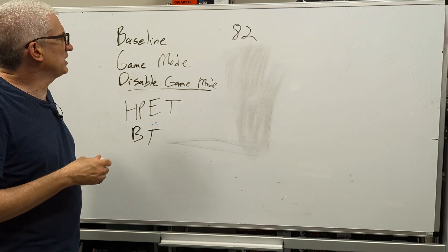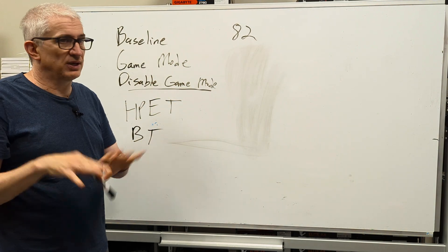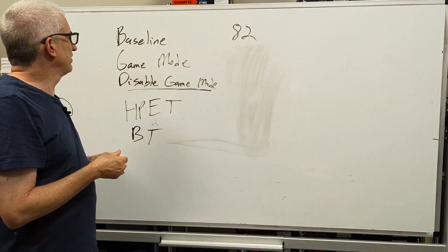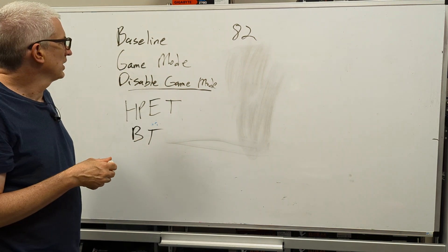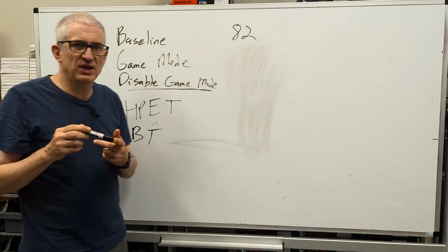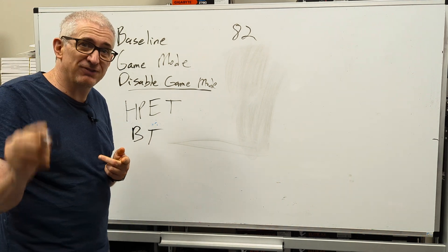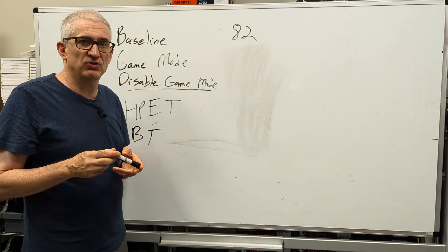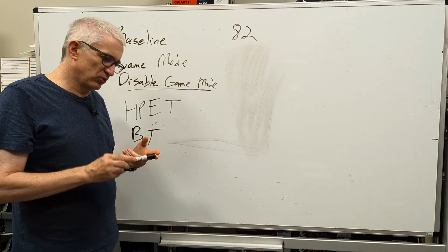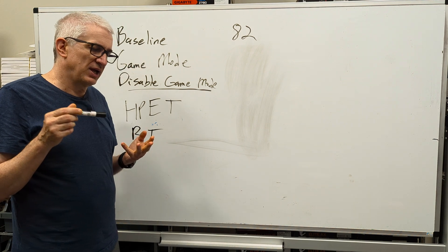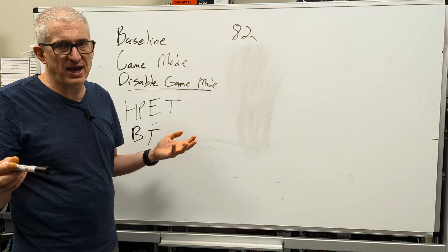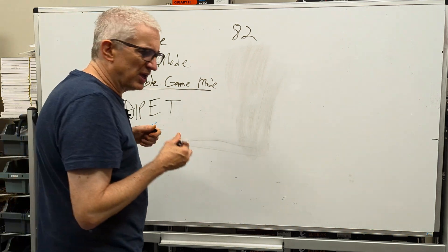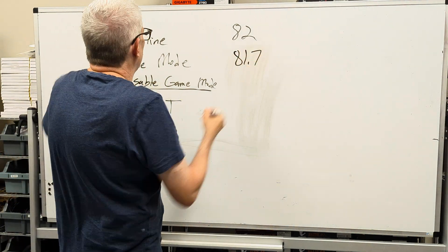So the first thing I did was I ran a baseline test and I got 82. Again, vanilla X-Plane, vanilla Windows 11. The first thing he suggests is game mode. Go in, enable game mode, which it was by default enabled in Windows 11. Then set up a special rule for X-Plane 12 and tell it to run in high performance mode all the time.